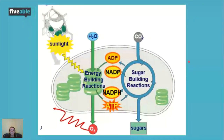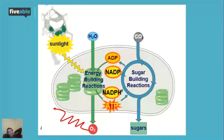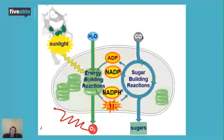Calvin cycle: what goes in — CO2, ATP, and NADPH. What comes out — glucose, ADP, and NADP+. The light reactions and Calvin cycle depend on each other equally: the Calvin cycle needs ATP and NADPH from the light reactions, and the light reactions need the recycled ADP and NADP+ back from the Calvin cycle.